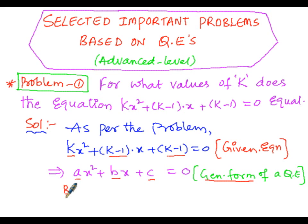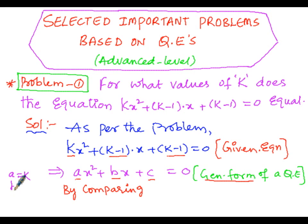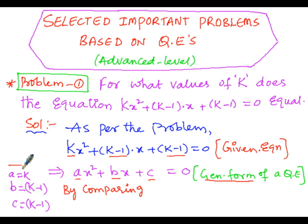By comparing the given equation with the general form, we get: a = k, b = (k-1), and c = (k-1). According to the problem, the equation has real and equal roots.